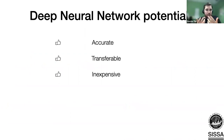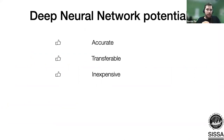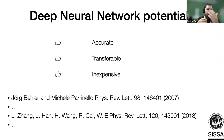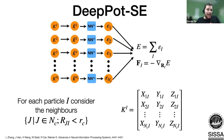We want to use deep neural networks because they are accurate and transferable as the underlying training theory, but much less expensive than ab initio simulations. There are many possible neural network methods; the first by Behler and Parrinello, but the one I use is DeePMD, developed by Linfeng Zhang and co-workers at Princeton. The neural network is very handy because it directly provides local energies and their derivatives, which are already computed when computing forces.